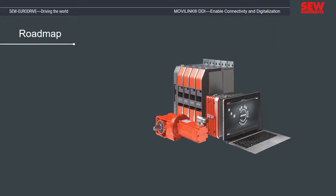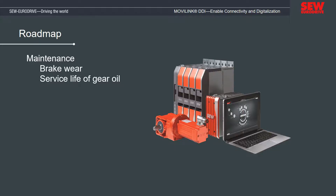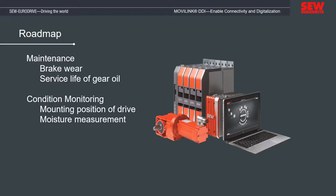While Movilink DDI already combines many functions in single cable technology, the range of functions is being steadily expanded. For example, it will be possible to transmit data on unit maintenance such as brake wear or the remaining service life of gear oil using the Movilink DDI cable. Condition monitoring functions such as detection of the drive's mounting position, moisture measurement in the terminal box to detect leaks, vibration analysis to measure rolling bearing wear, or the analysis of other sensors external to the drive will also be possible in the future.